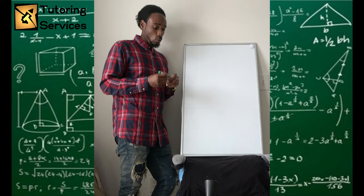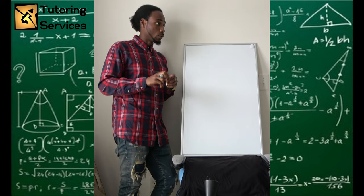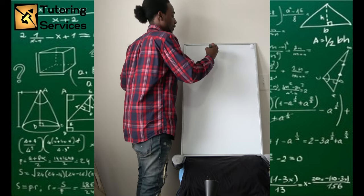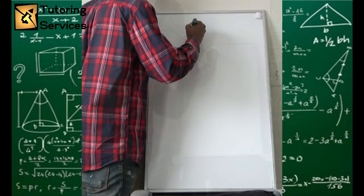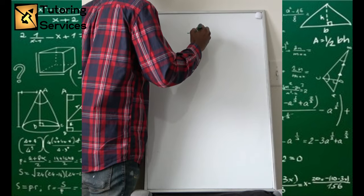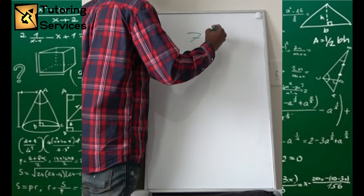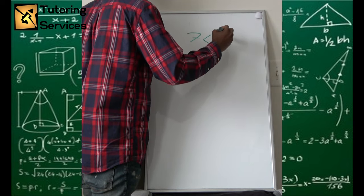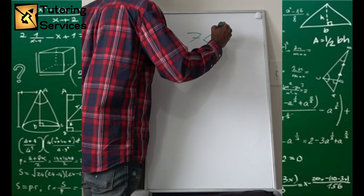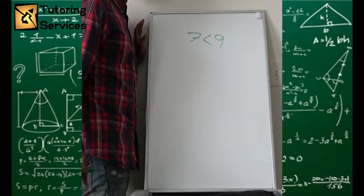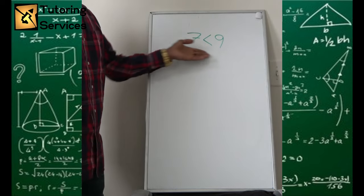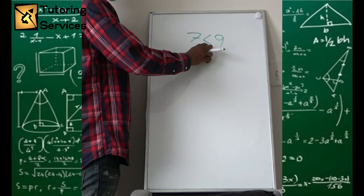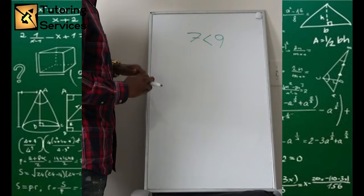Now, what is an inequality? Well, if I show something like this — the number seven is less than the number nine. This is considered an inequality. The inequality symbol here being used is less than.